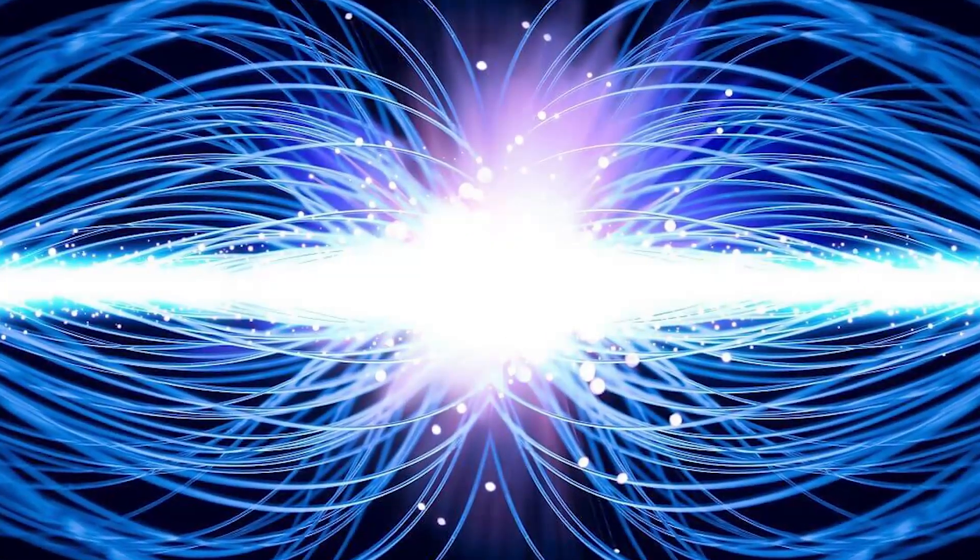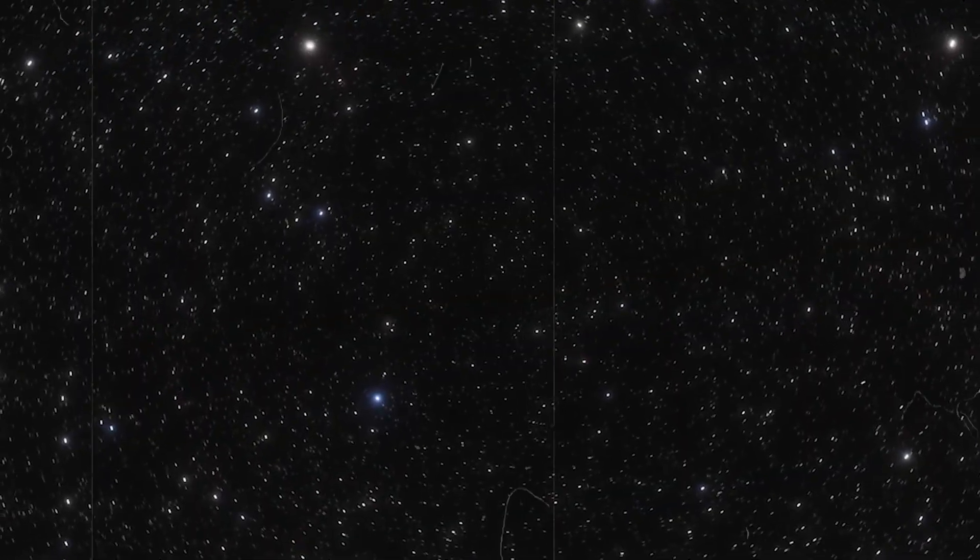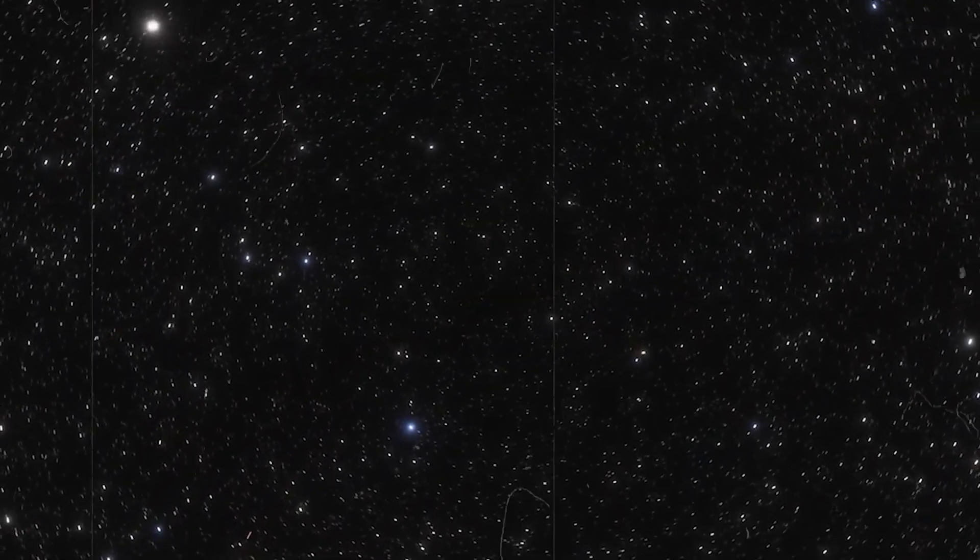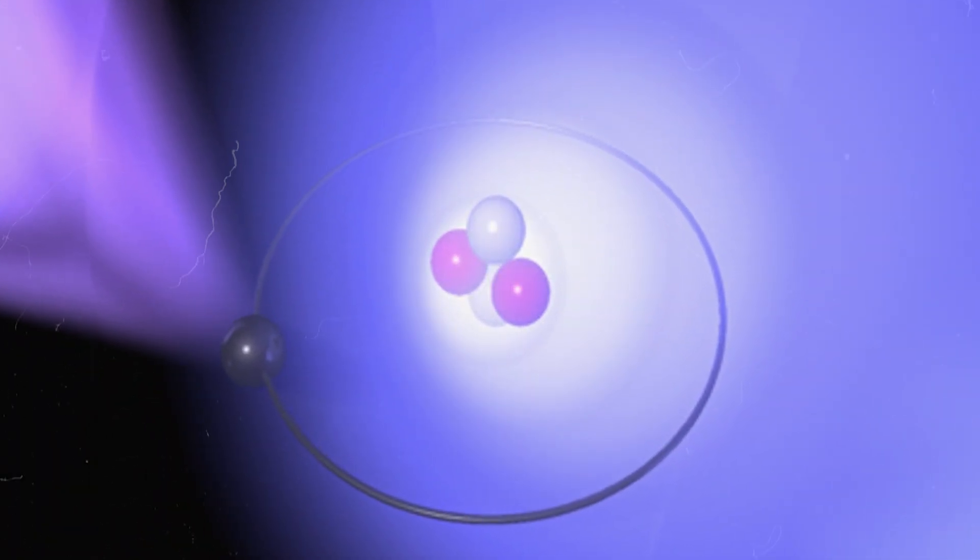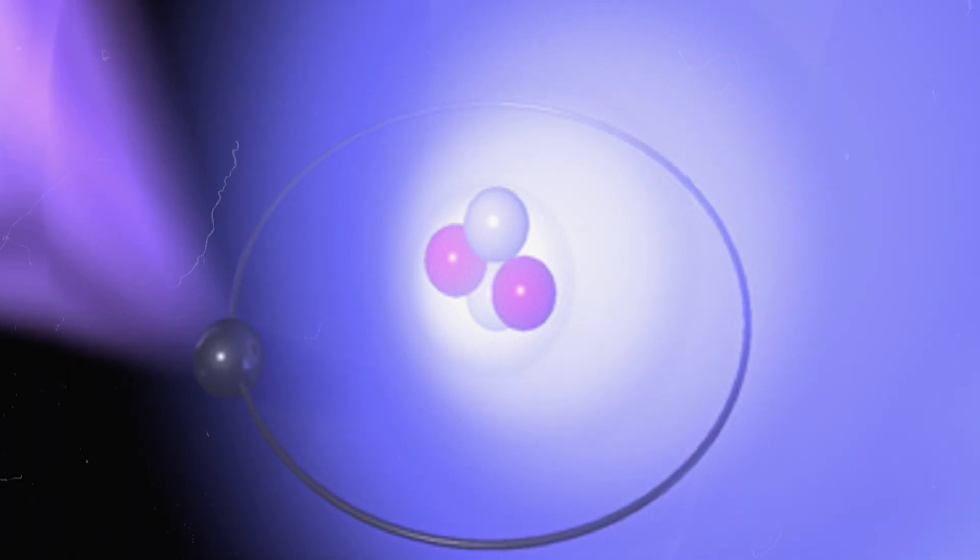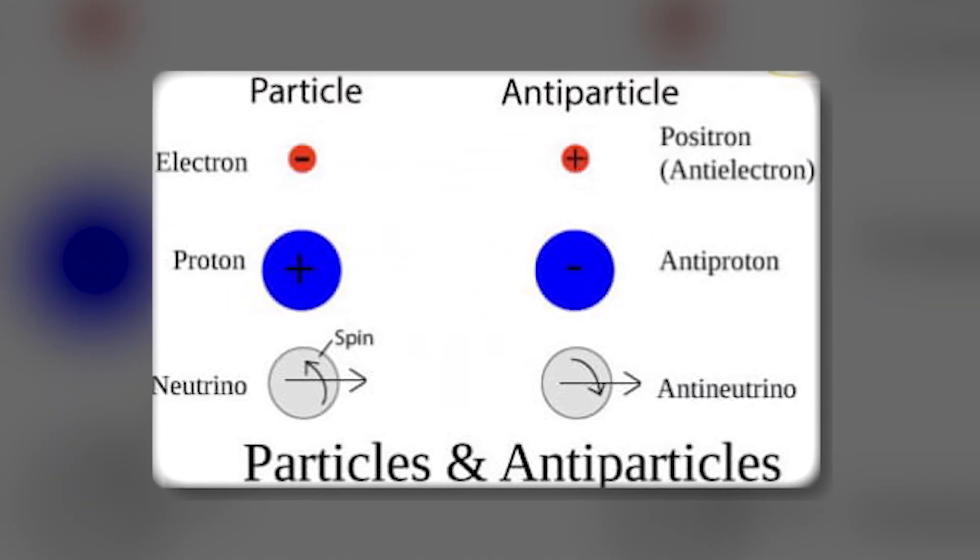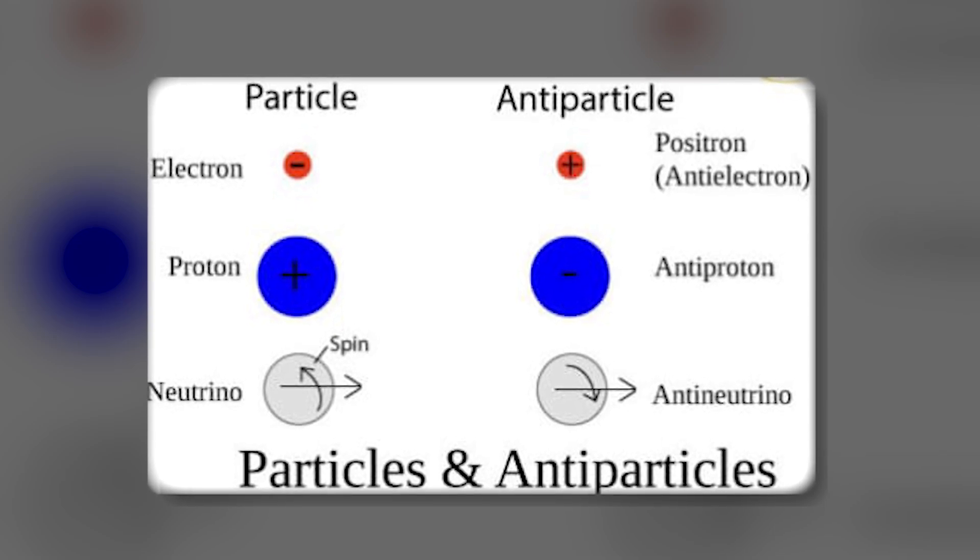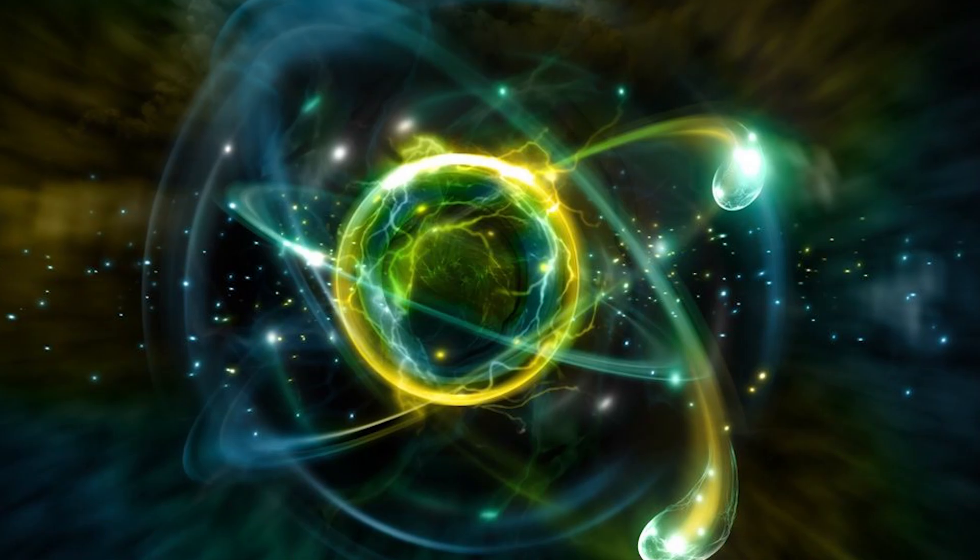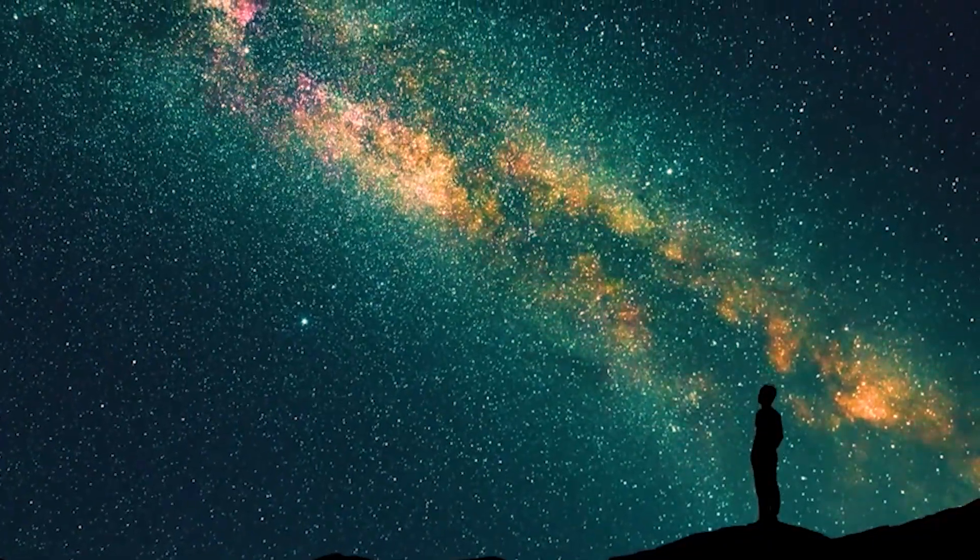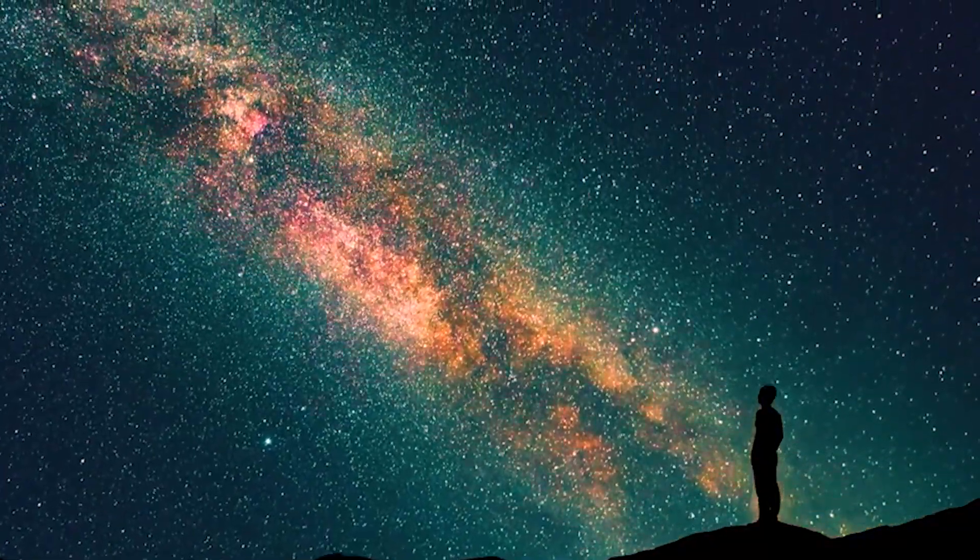If matter and antimatter had formed in equal parts, they would have annihilated each other, leading to a scenario where the universe might have been empty. The question then arises, why aren't there equal amounts of antimatter and matter in the universe? The best explanation so far is that there's a slight difference in the properties of particles and antiparticles. This slight imbalance, where one particle is left over out of a billion, accounts for everything we see in the universe, including galaxies, stars, planets and ourselves.